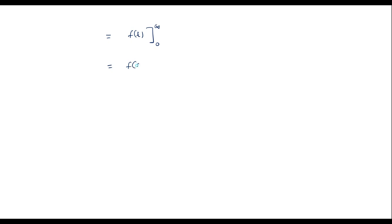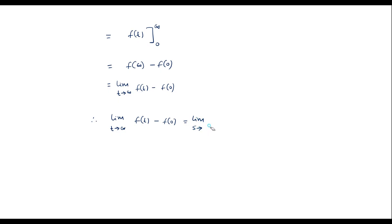That gives us f(infinity) minus f(0), or equivalently the limit as t tends to infinity of f(t) minus f(0). Setting this equal to the RHS, we have: limit as t tends to infinity of f(t) minus f(0) equals limit as s tends to 0 of s·F(s) minus f(0). The f(0) terms cancel, giving us the limit as t tends to infinity of f(t) equals the limit as s tends to 0 of s·F(s). This is the final value theorem, which is proved.